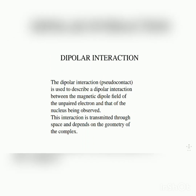The dipolar interaction is used to describe the interaction between the magnetic dipolar field of the unpaired electron and that of the nucleus being observed. This interaction is transmitted through space and depends on the geometry of the complex. The geometry of the complex is very important in this case. The magnetic dipole field of the unpaired electron is why we observe the nucleus.